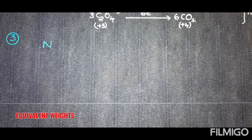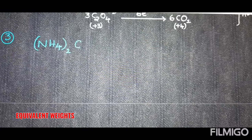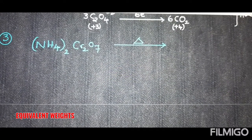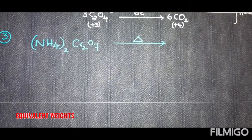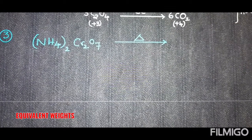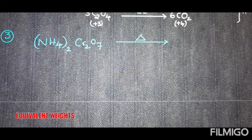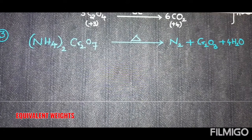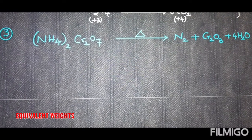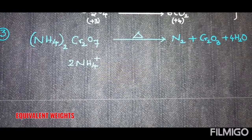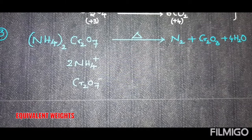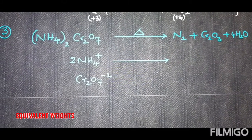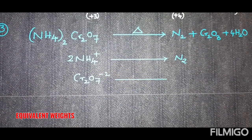Next example: the decomposition of ammonium dichromate, (NH₄)₂Cr₂O₇. In the previous case, both cation and anion underwent oxidation, so n-factor was the sum of electrons. Here, ammonium dichromate decomposes into N₂, Cr₂O₃, and water. One mole of ammonium dichromate contains two moles of NH₄⁺ and one mole of Cr₂O₇²⁻. The n-factor is the number of electrons involved per mole of molecule.